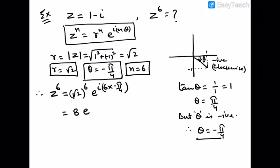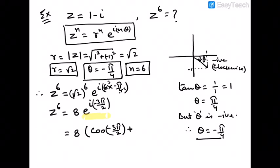By Euler's formula we can write e to the power i minus 3 pi by 2 as cos minus 3 pi by 2 plus i sine minus 3 pi by 2.